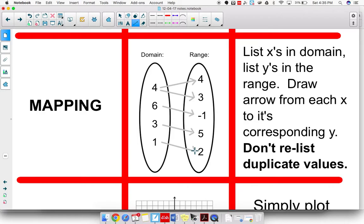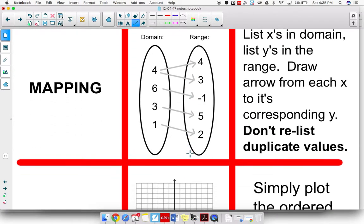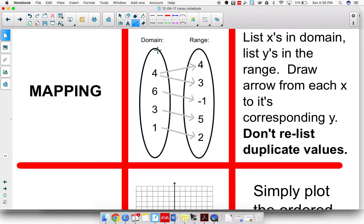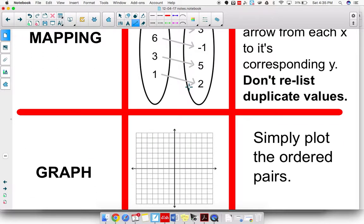So that is how you show a mapping. It's very similar to a table. It's just this one lists it as a domain and range, and then we don't include the duplicate values.